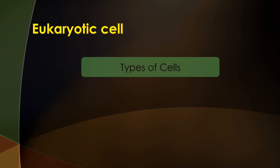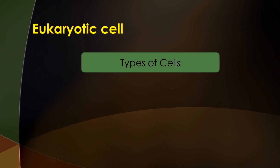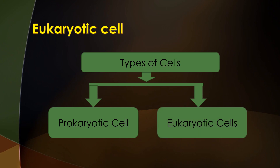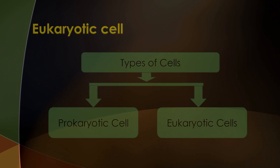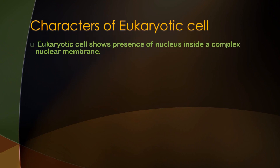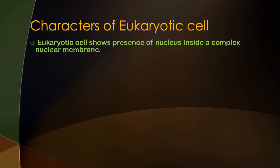Generally, there are two types of cells: prokaryotic cell and eukaryotic cell. Eukaryotic cells show the presence of a nucleus inside a complex membrane. In the eukaryotic cell, the nucleus is covered by a membrane called the nuclear membrane.